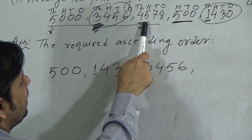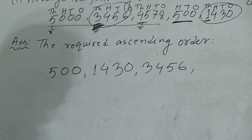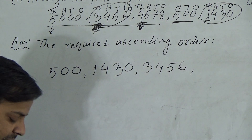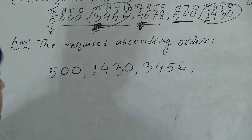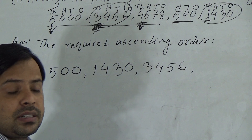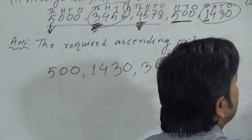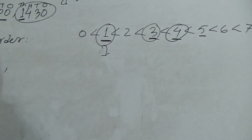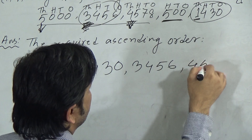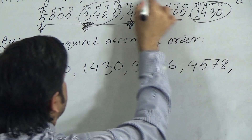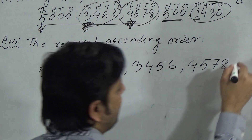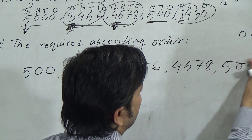Now two numbers remain: 5000 and 4578. In 4578, the thousands digit is 4, and in 5000 the thousands digit is 5. Since 4 is smaller than 5, 4578 is the smaller one. So we write 4578 next. Only one number remains — 5000 — so we write 5000 last.